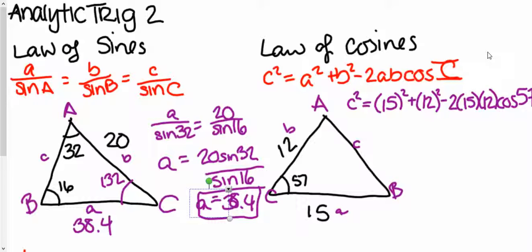minus 2 times 15 times 12 cosine of the angle. That's a 7 over there, and then take the square root of all of that, so I get that c is about 13.15.